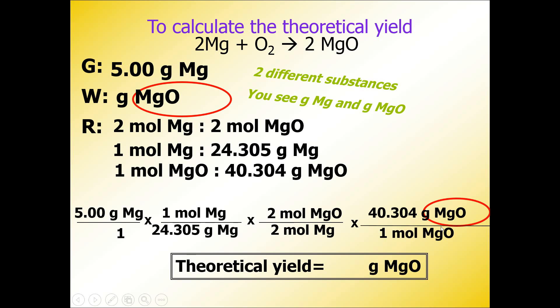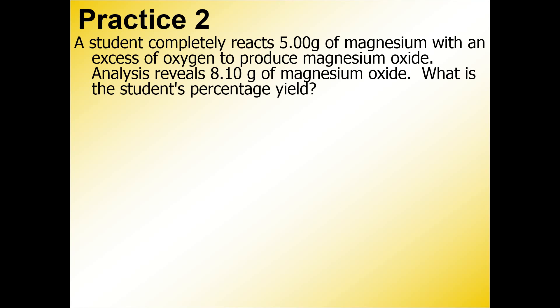Here is our theoretical yield: 8.29 grams. Theoretical yield is a calculated value—this is typically what you want to get in the experiment. This is your goal: you should get 8.29 grams after completing this experiment between magnesium and oxygen.